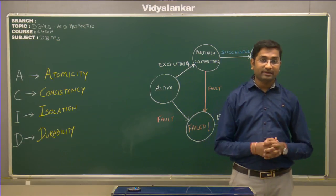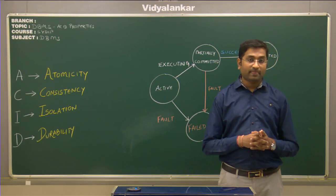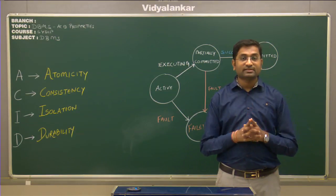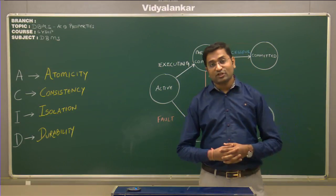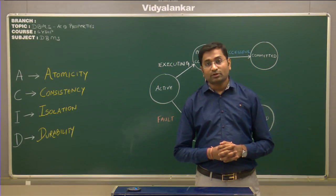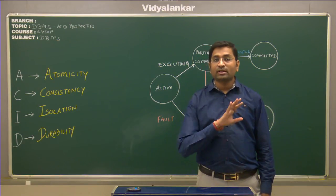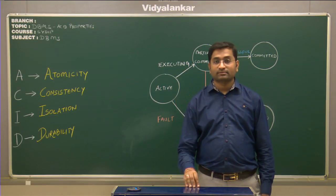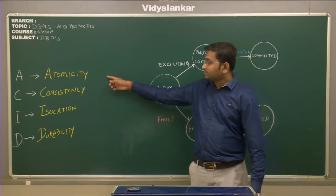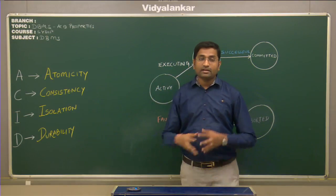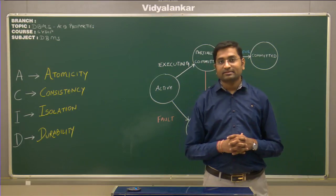The fourth property is durability. This property ensures that after the transaction has successfully completed, all the changes made by the transaction should become permanently committed within the database and should never be rolled back. These four properties present in a relational database management system are known as ACID properties.